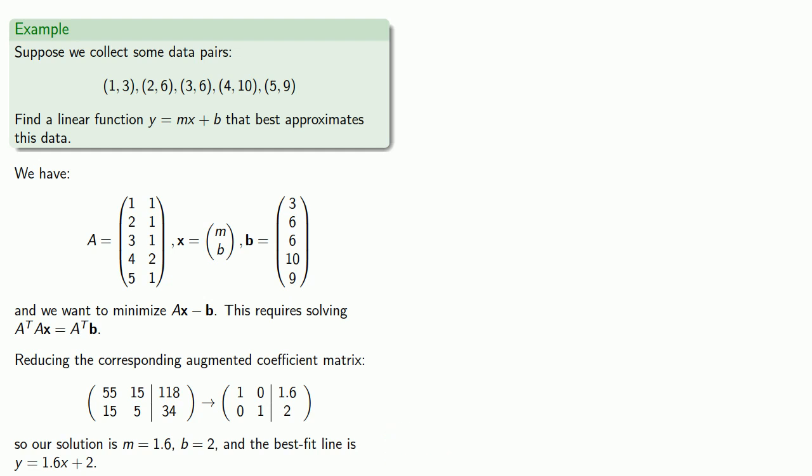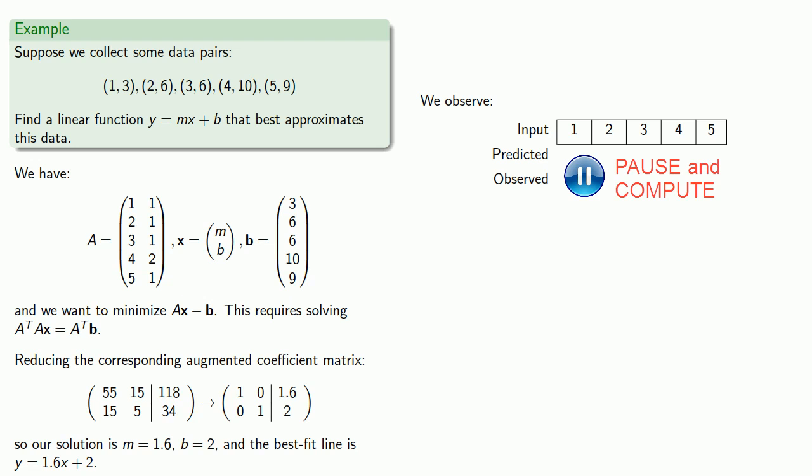And just as a follow-up to this problem, we might compare what our predicted values are using this best fit equation and the observed values. So our inputs, 1, 2, 3, 4, 5, give us predicted values. And if we compare those to our observed values, we see there is a reasonably good fit.